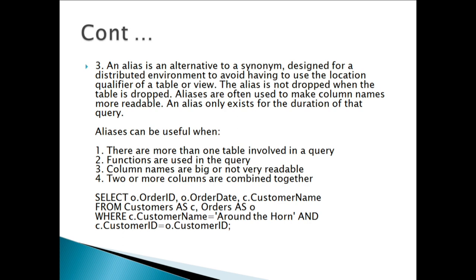An example of an alias is given — please go through the syntax. Here, 'o' and 'c' are alias names. An alias for a table or view can be defined at a local server to refer to a table or view at the current server or a remote server. An alias name for a table or view can be used wherever the table name or view name can be used to refer to the table or view in an SQL statement.